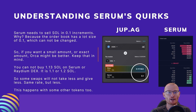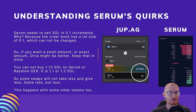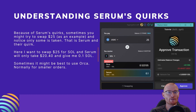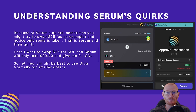Another quirk: Serum needs to sell SOL in 0.1 increments, because the order book has a lot size of 0.1 which cannot be changed. So if you want a small or exact amount, Orca might be better — keep that in mind. You cannot buy 1.13 SOL on Serum or Radium DEX; it is 1.1 or 1.2 SOL. So some swaps will take less and give less at the same rate. This happens with some other tokens as well. Because of Serum's quirks, sometimes you might try to swap $25 and notice only some is taken. Here I want to swap $25 for SOL, and Serum will only take $20.40 and give me 0.1 SOL. Sometimes it might be best to use Orca, normally for smaller orders. You can see $25 with Orca gives 0.122 SOL, but with Serum it gives 0.1 SOL and only takes $20.